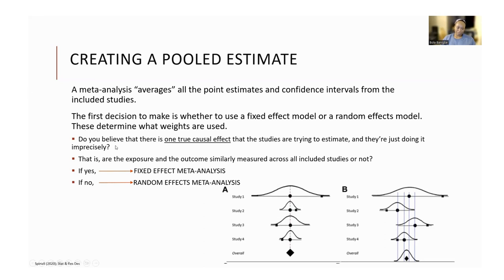How do you choose? The fixed effect model assumes that there is one true effect size across all the primary studies — it's basically assuming that each study included in our meta-analysis is measuring or estimating the same underlying parameter. So we're assuming that all the studies were conducted in the same population, they used the same inclusion criteria, the treatments or interventions were administered in the same way, and the outcomes have been measured consistently.